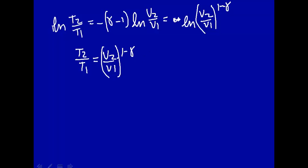And remember, x to the a plus b is equal to x to the a times x to the b, so we can write this as V2 over V1 times,